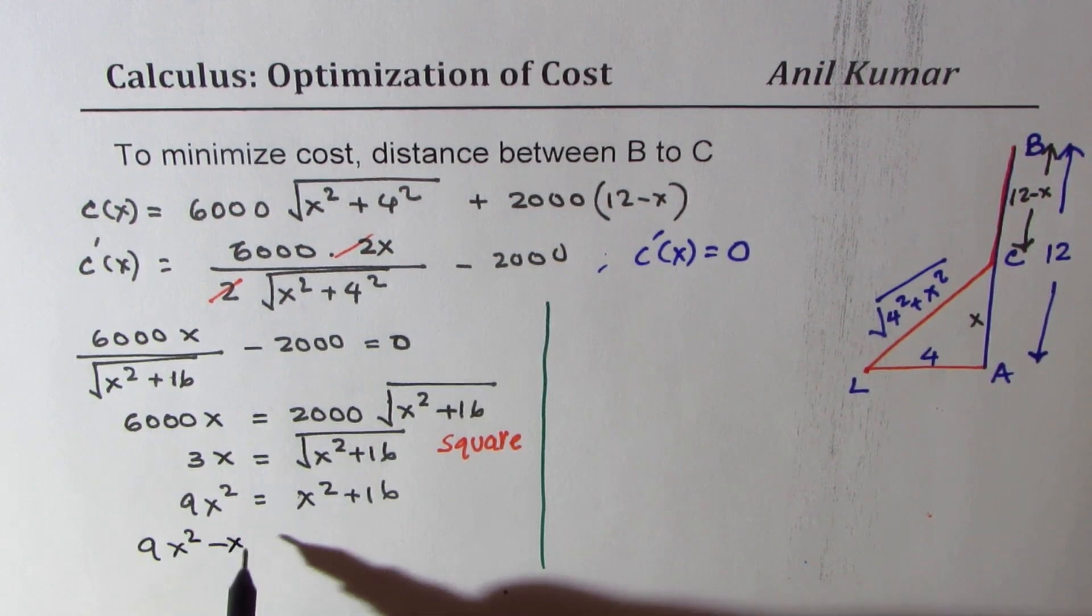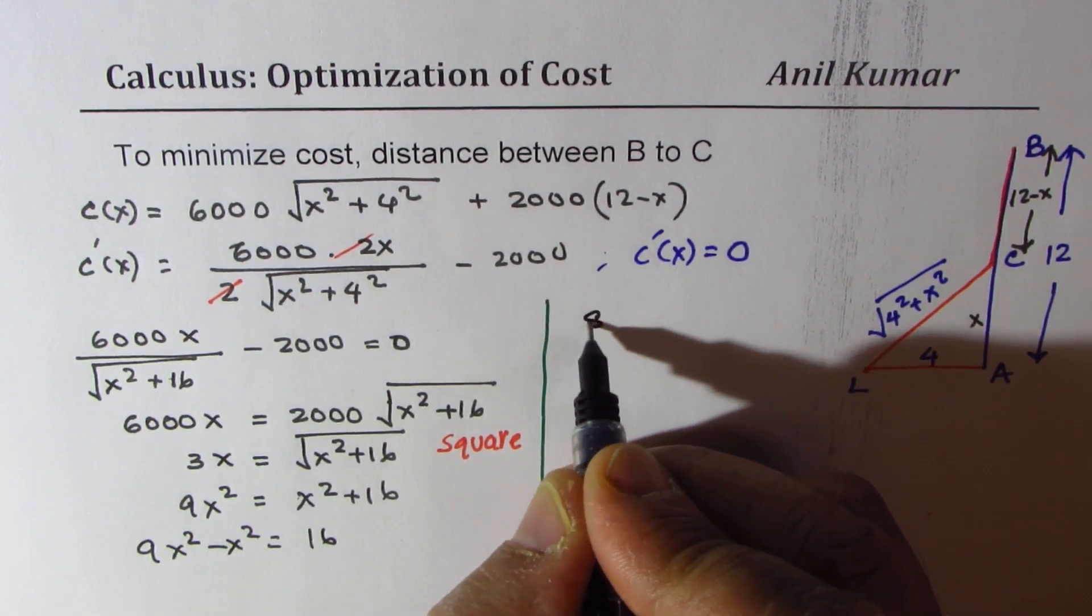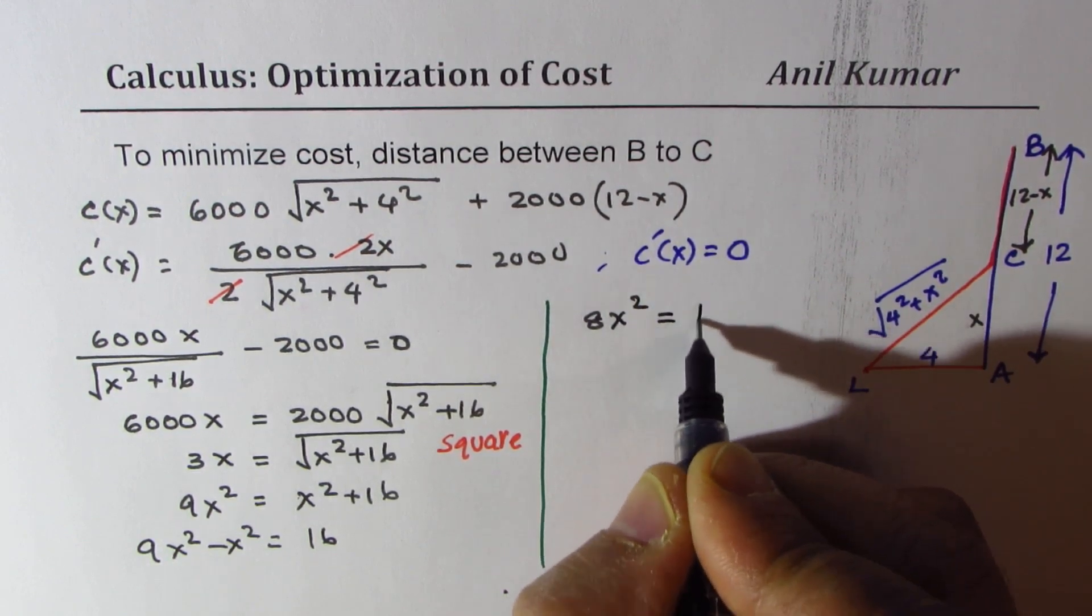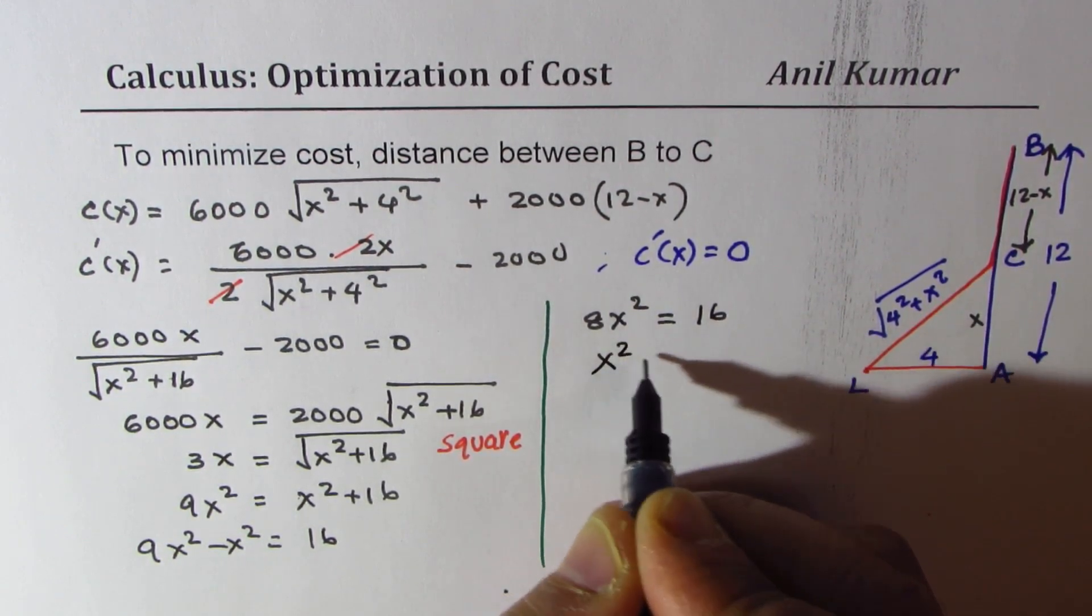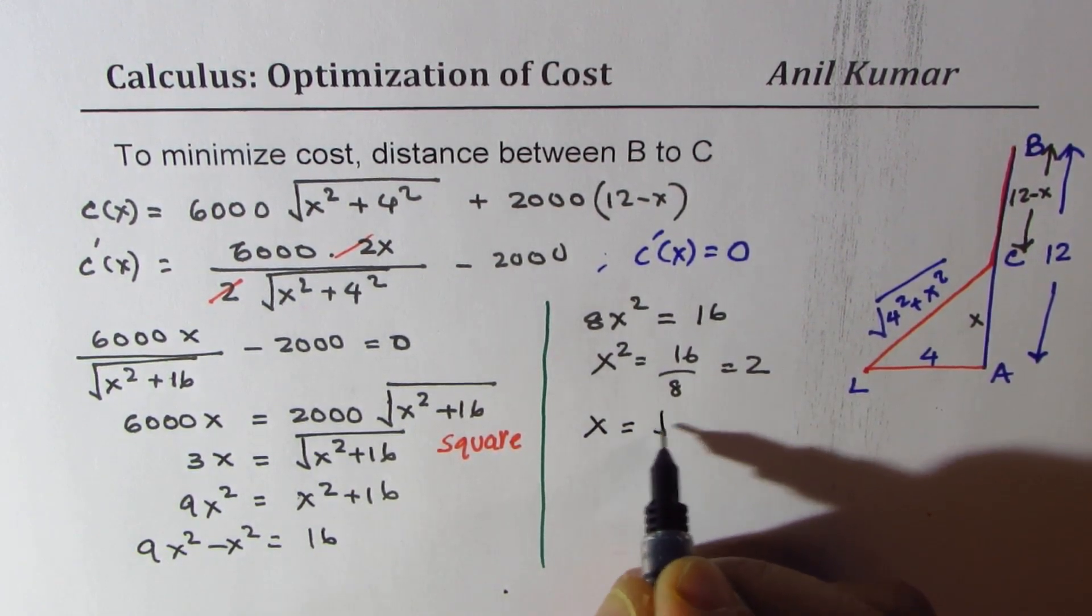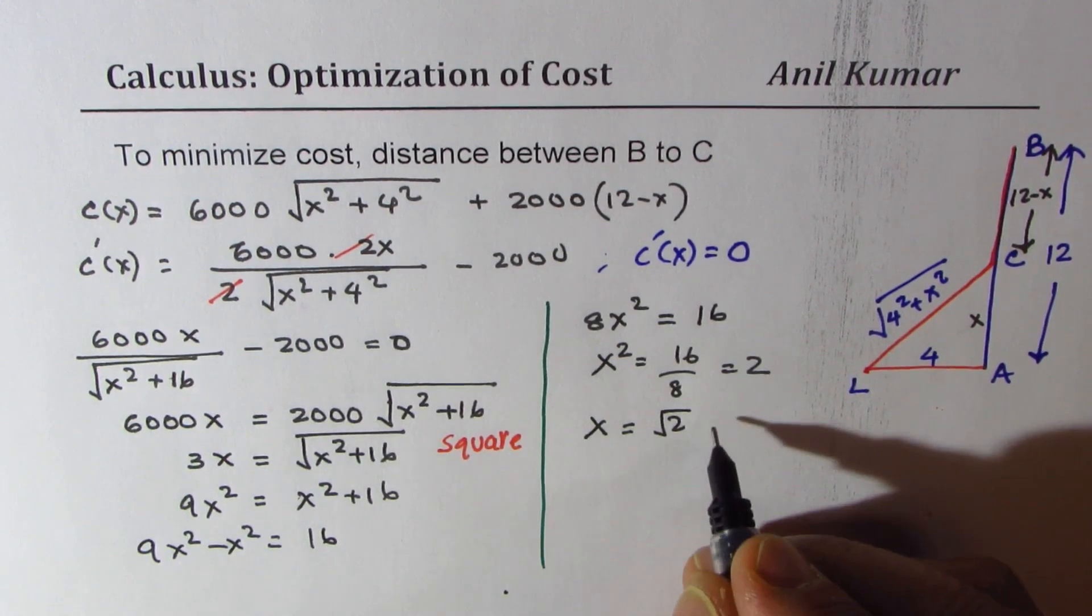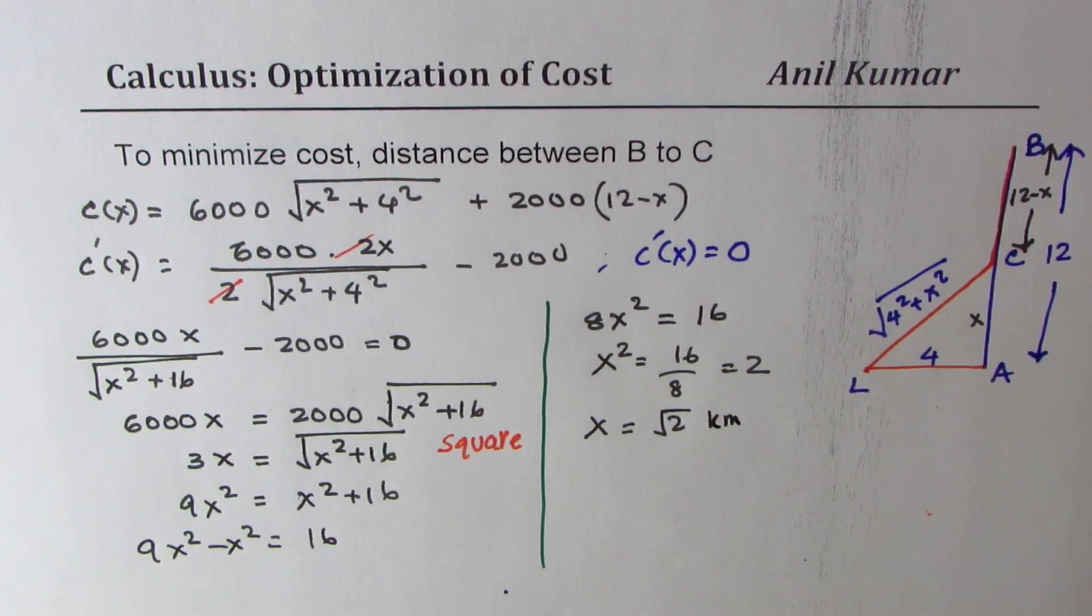So we get 9x square minus x square equals to 16, which is 8x square equals to 16, or x square equals to 16 divided by 8, which is 2. So x is square root of 2. We'll take only positive value and this is in kilometers.